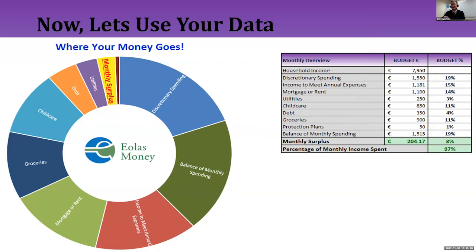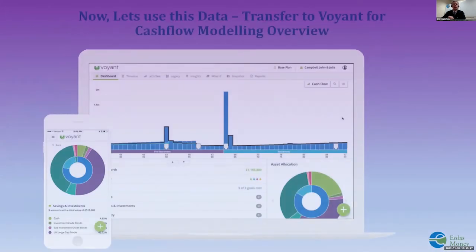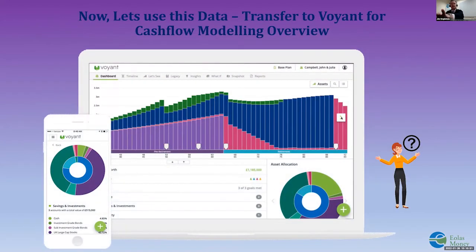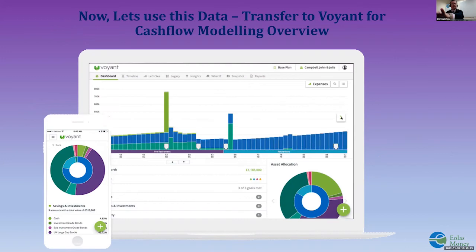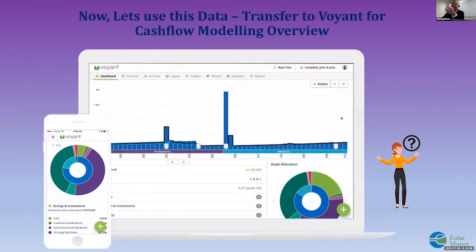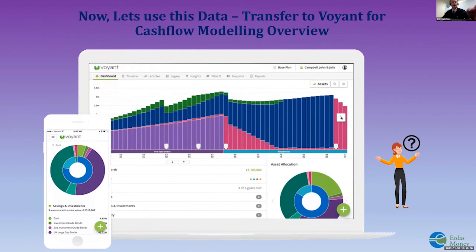Lorcan and Niamh can account for 97% of their money — that 3% is the surplus. We're now going to take that data and transfer it into the cash flow modeling software. All we're taking are the data from their spending plan graph and inputting it into the cash flow modeling to see what the future holds for Lorcan and Niamh.